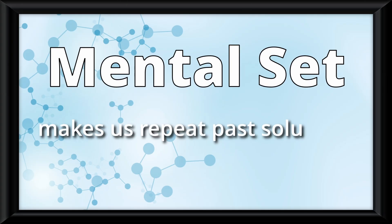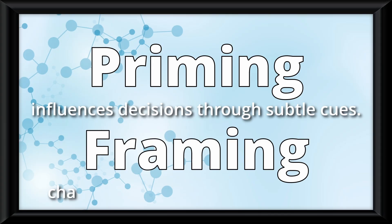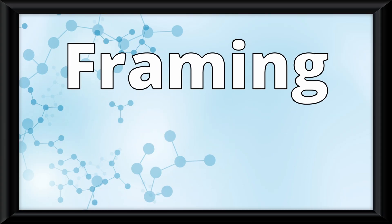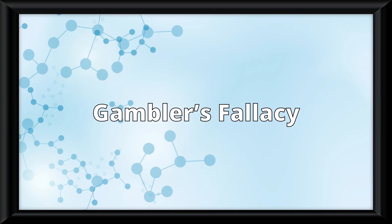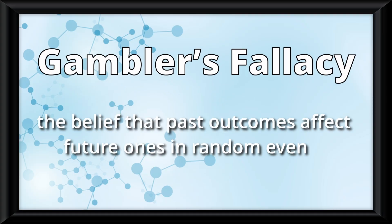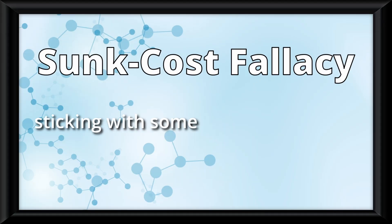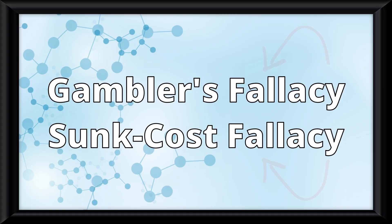Decision making is also shaped by other factors. A mental set makes us repeat past solutions that worked before. Priming influences decisions through subtle cues, while framing changes decisions based on wording. An example of framing might be when you say a 90% success rate versus a 10% failure rate. Another big thing that muddies up this entire process are cognitive biases. The gambler's fallacy is the belief that past outcomes affect future ones in completely random events. The sunk cost fallacy is sticking with something just because you've already invested in it. Obviously these are both flawed ways of thinking, which is why they are called fallacies.